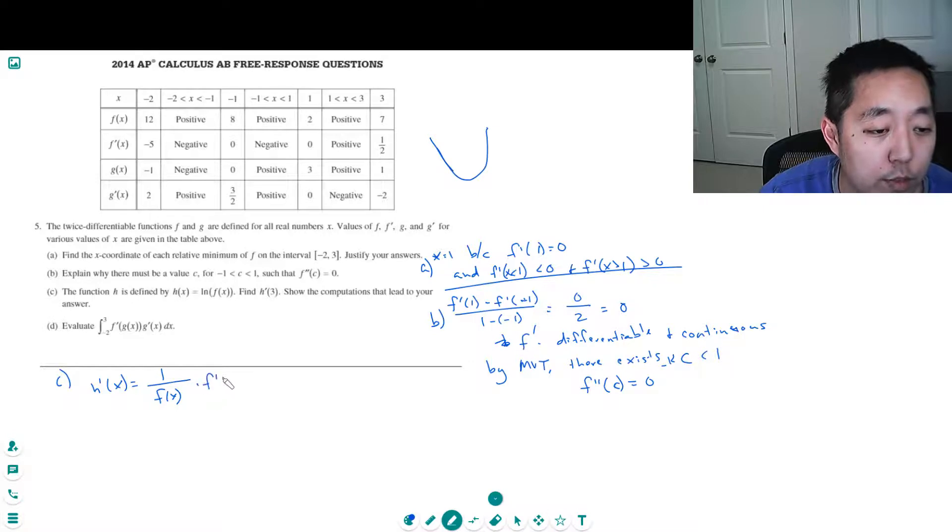So h prime of 3 is equal to f prime of 3 over f of 3. They tell you f prime of 3 is 1 over 7, so that equals 1 over 14.